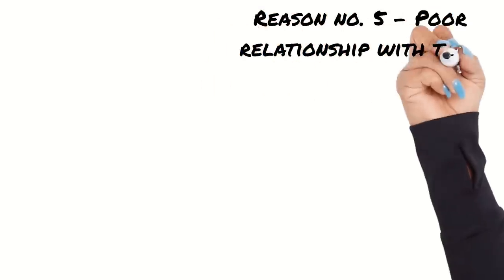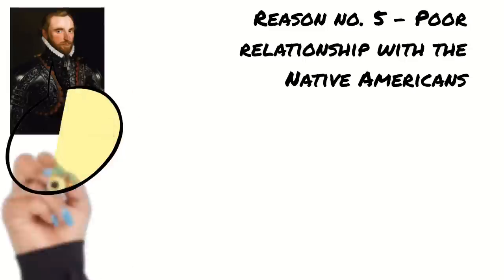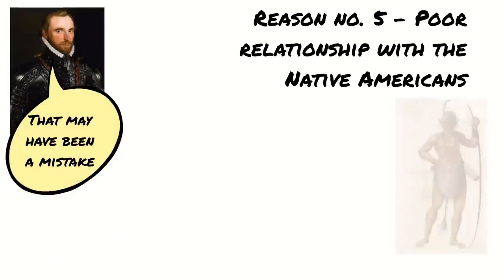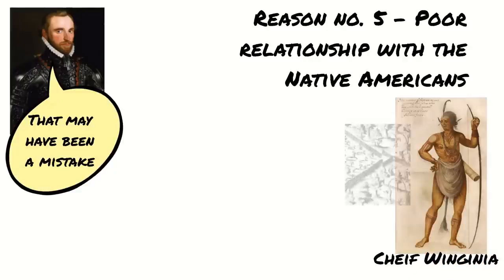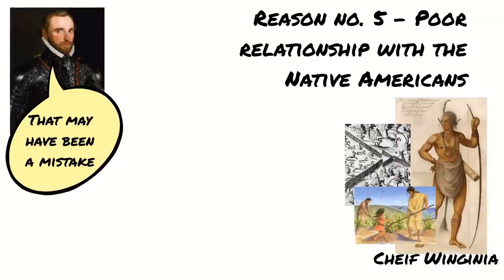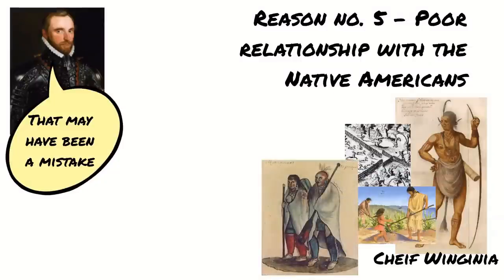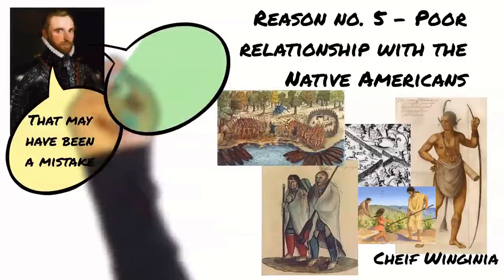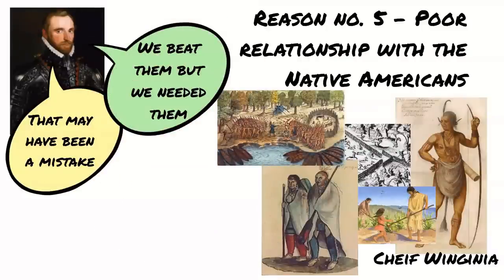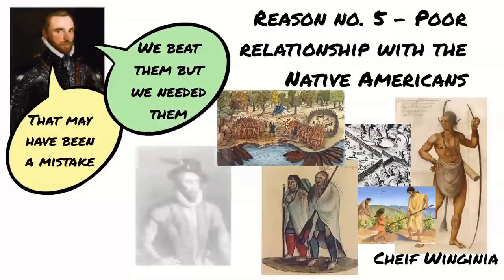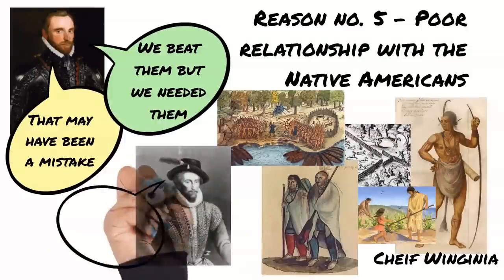Finally, relations with Native Americans became increasingly strained. Richard Grenville's lashing out at the Algonquins has already been mentioned. At first their leader Chief Wingunia tried to help the colonists by showing them how to set traps and farm food. But with increasing hostility from the English and an outbreak of disease brought by the settlers, the chief led an attack on the settlers. The colonists were successful in repelling the attack, but this led to a crisis within the leadership of the colony, and with them not being able to hunt or trap for themselves, the first colonists returned home.